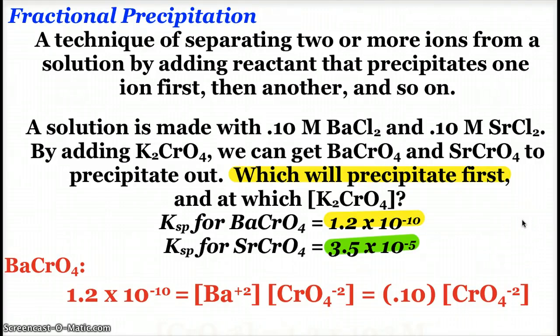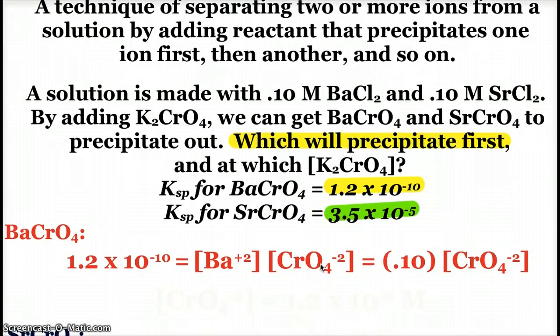So for barium chromate, I take the KSP for barium chromate and its expression. I know the barium ion concentration from the problem, 0.1 molar. And when I solve for chromate, when the chromate concentration, by adding the potassium chromate, gets to 1.2 times 10 to the negative 9th molar, I would start to see barium chromate precipitate out.